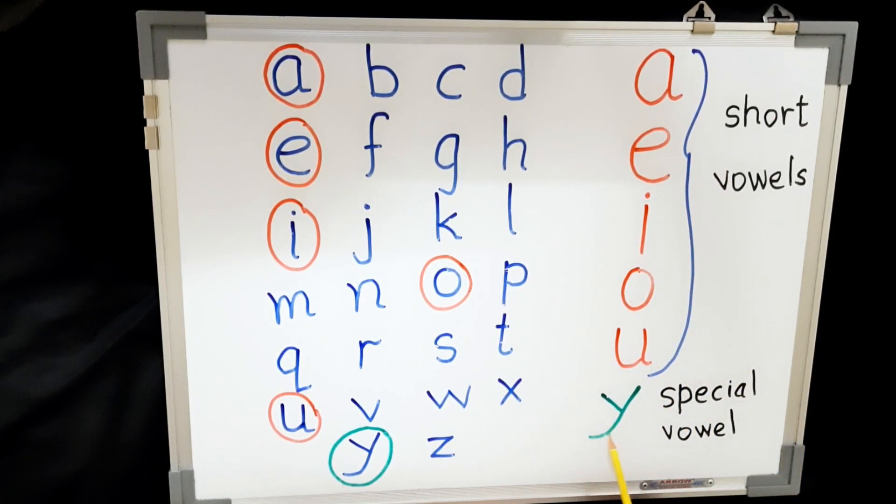And alphabet Y is a special vowel. So, why is it a special vowel? Because sometimes it makes the sound of consonant, and sometimes it makes the sound of vowel. Regarding this, we will do in a later video.